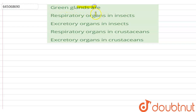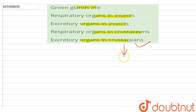Hello students, your question is: green glands are — with options: respiratory organs in insects, excretory organs in insects, respiratory organs in crustaceans, or excretory organs in crustaceans. The correct option here is excretory organs in crustaceans. Green glands, which are also known as antennal glands, are one of the pairs of excretory organs.